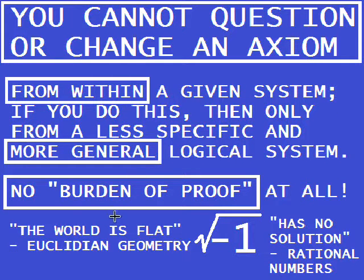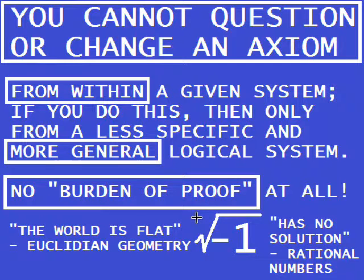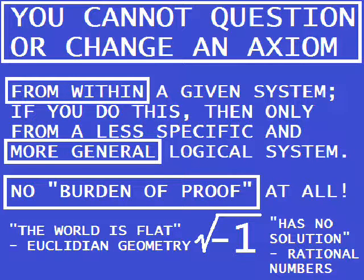For instance, if you say in Euclidean geometry the world is flat, then it simply is flat. There is no way you can address the issues of the world from the geometry itself. And the root of minus one has no solution within the set of rational numbers. It does have a solution, namely i, in the set of complex numbers. However, that's a higher system than rational numbers. And the world is flat might not be true if you look at the sphere, because a sphere has different properties than a flat area — in particular, two parallel lines very well meet in a finite space on a sphere, like at the poles. But these are different reasoning systems.